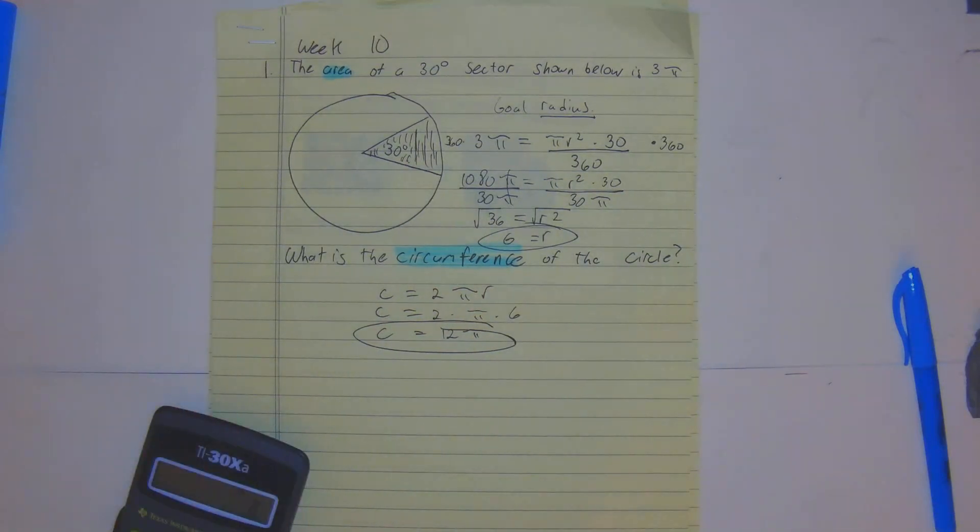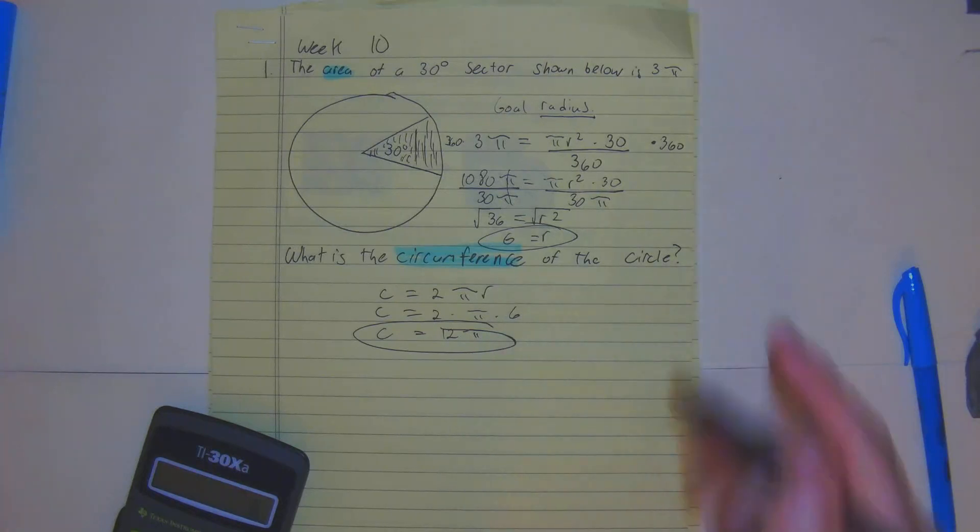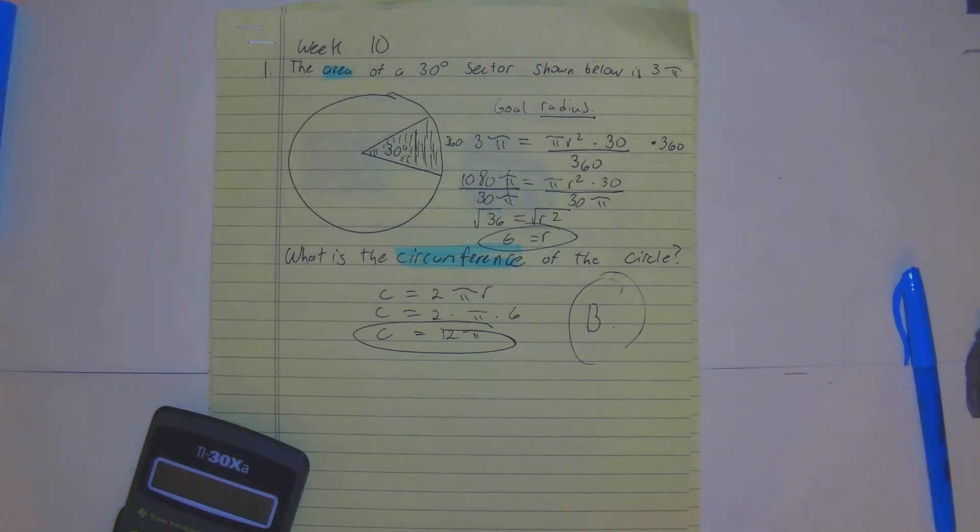Our answer here in terms of pi would be 12 pi, which is choice B on the assignment. That's number 1.